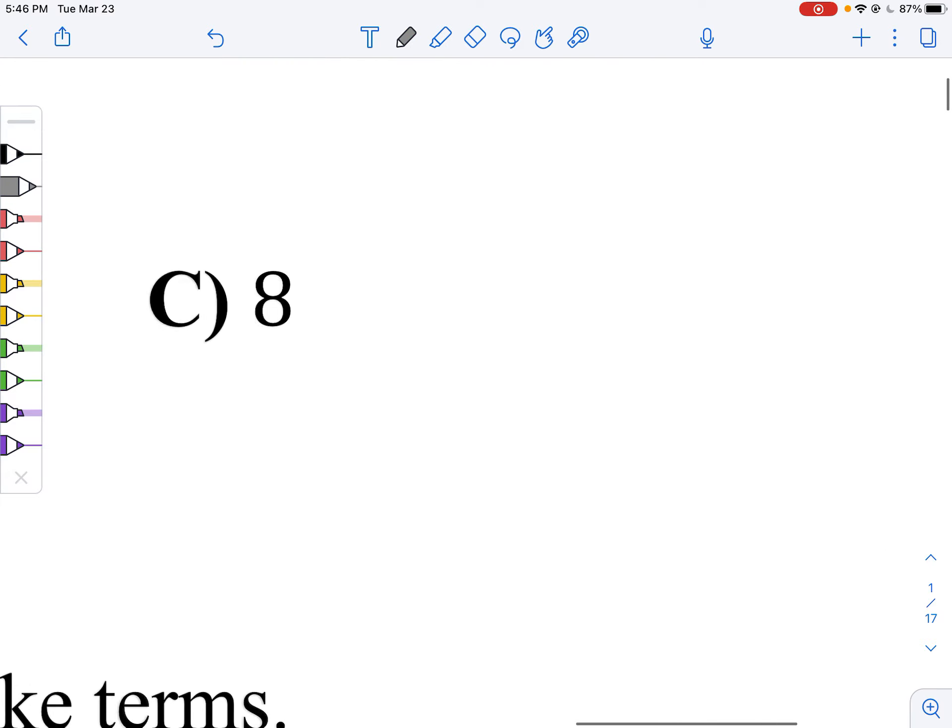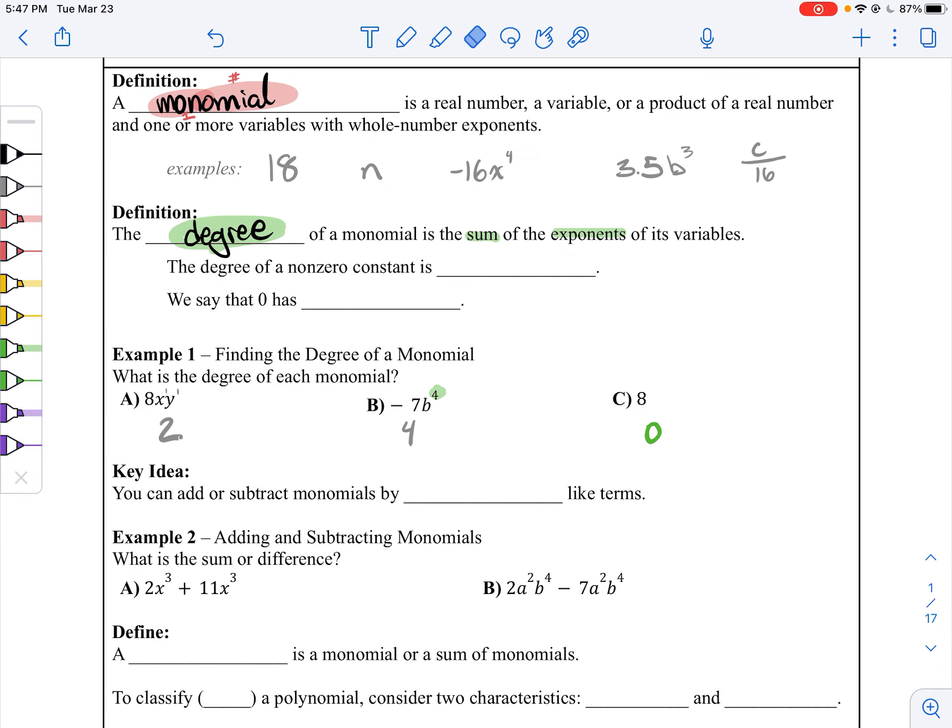And then here there is no variable. You could even consider it to be times a to the zeroth power, right? Because a to the zeroth power is 1. But that's why this has a degree of 0.